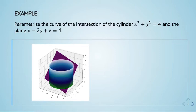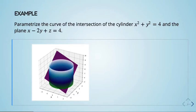Parametrize the curve — the intersection of the cylinder x²+y²=4 and the plane x−2y+z=4. The picture is here; I really have two surfaces. The cylinder: everyone should recognize x²+y²=4 is a circle. In three-dimensional space, z can take on any value, so we get a circle at every z level, and the result is the cylinder you see here.